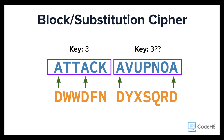They know an attack is coming, but they don't know when. The person cracking this code needs to try up to 26 keys per word, or per block. This would definitely slow them down in deciphering the message.